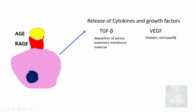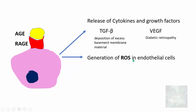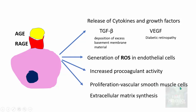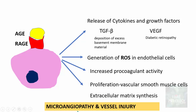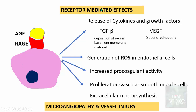Other growth factors released include vascular endothelial growth factor, which has a role in diabetic retinopathy. This AGE-RAGE interaction also results in generation of reactive oxygen species in endothelial cells, increased pro-coagulant activity, and proliferation of vascular smooth muscle cells with synthesis of extracellular matrix. All these combined result in damage to blood vessels — microangiopathy and vessel injury. These are the receptor-mediated effects of advanced glycation end products.